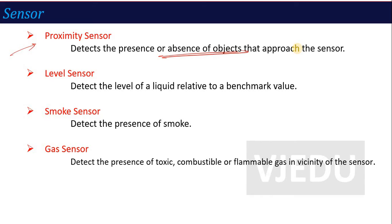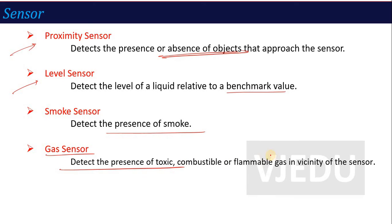A level sensor detects the level of a liquid relative to a benchmark value. If you are under a certain level, it will detect it and tell you the action — informing you that your level is down. A smoke sensor detects the presence of smoke. A gas sensor detects the presence of toxins, combustible, and flammable gas in the vicinity of the sensor. Whatever comes in the range of the sensor, it detects it and communicates it via the communication devices. This is all about the different types of sensors available.